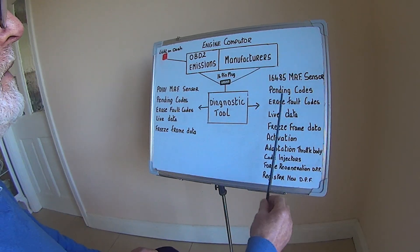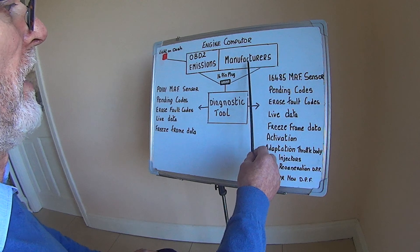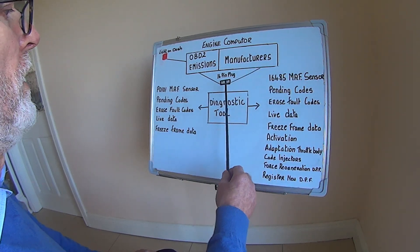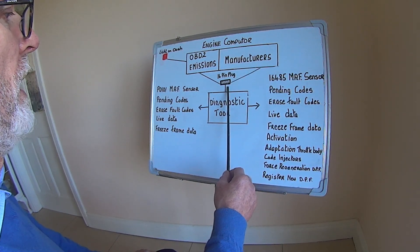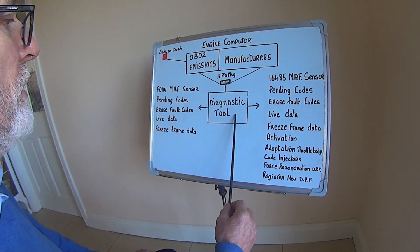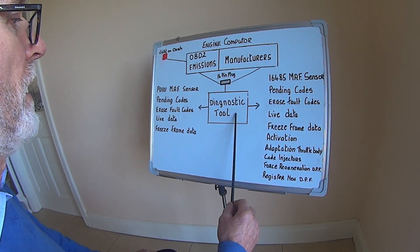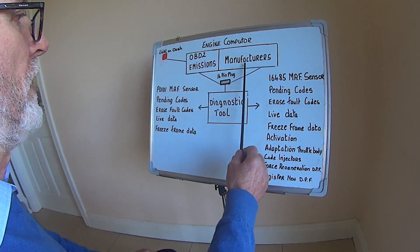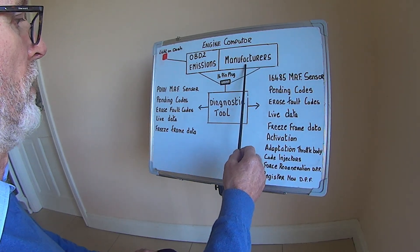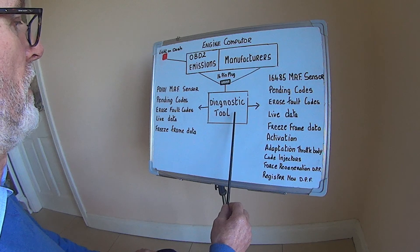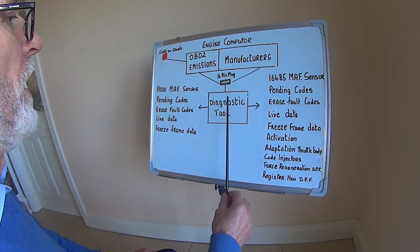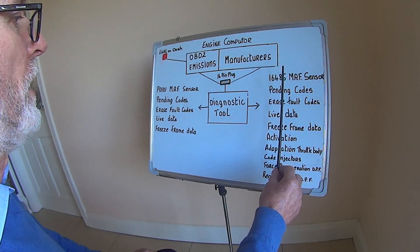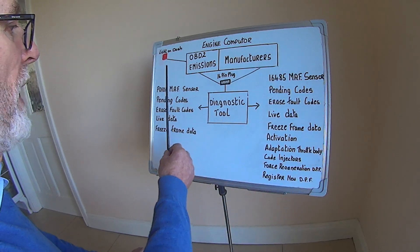Over on this side we have the information we receive from the manufacturer's side of the engine computer. Here we have our 16-pin plug that's underneath the dash, and here we have our diagnostic tool. This diagnostic tool has to have the capability of connecting into the manufacturer's side of the computer, and when you have this type of tool, you can switch from OBD2 over to manufacturer's and back and forth.